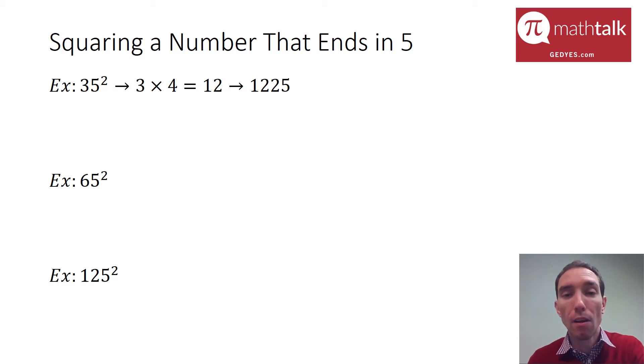Let's look at 65 squared. The number before the 5 in this case is 6. 6 times itself plus 1 is 7. 6 times 7 is 42, so I'm just going to put 25 at the end of that. 4225 is what 65 squared is.